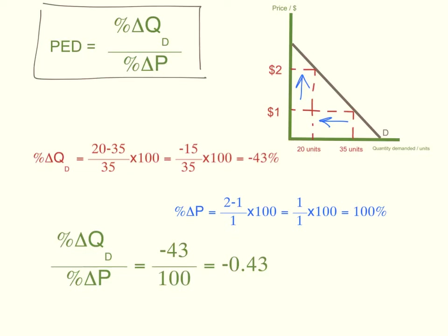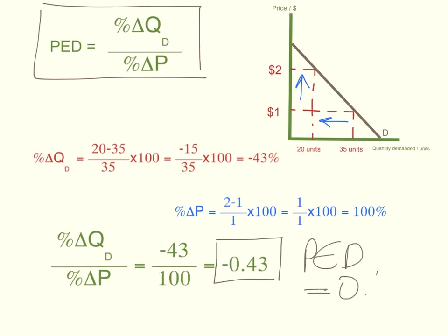The negative means that the two variables — quantity demanded and price — move in opposite directions. When one increases, the other decreases. We know that's the case on the demand curve: whenever price rises, quantity demanded falls, and whenever price falls, quantity demanded rises. So economists would normally just ignore the negative, because we can already assume that all price elasticity of demand values would be negative, and just look at the absolute value. So while the mathematical value in this example is negative 0.43, economists would only look at the absolute value and say that price elasticity of demand equals 0.43.